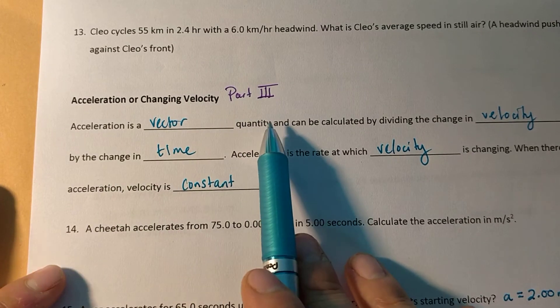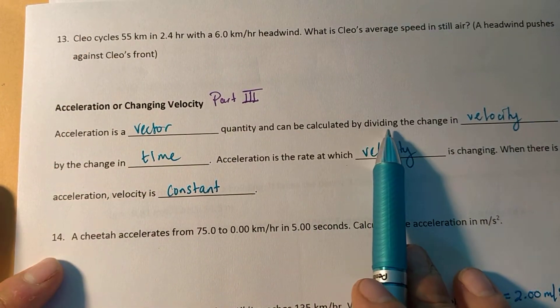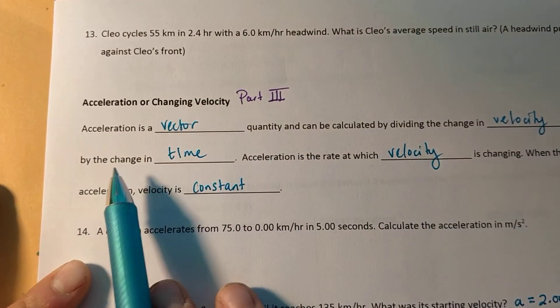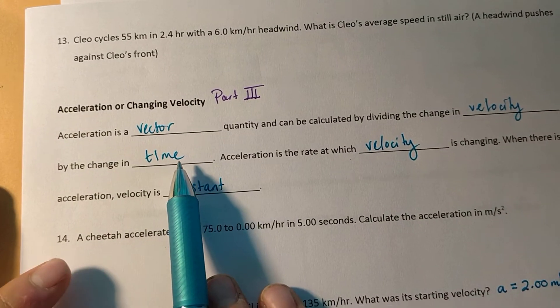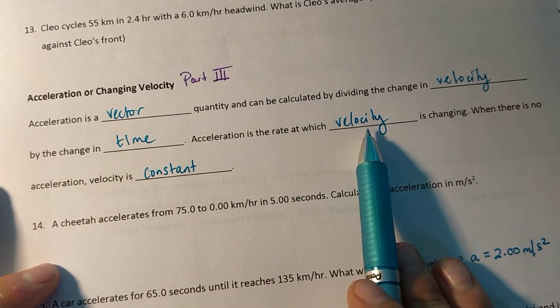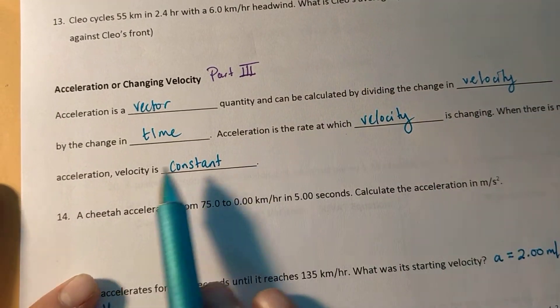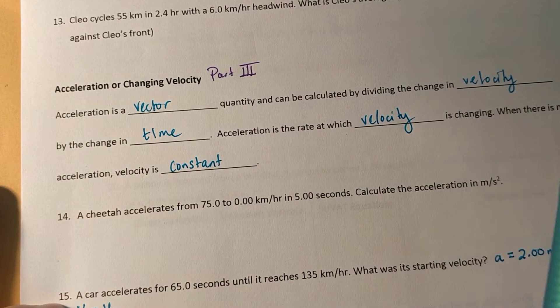Acceleration is a vector quantity and can be calculated by dividing the change in velocity by the change in time. Acceleration is the rate at which velocity is changing. When there is no acceleration, velocity is constant.